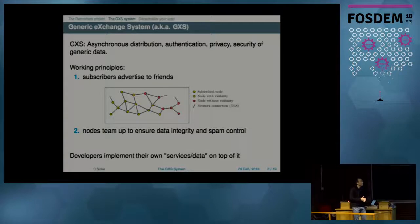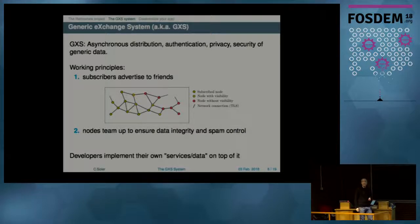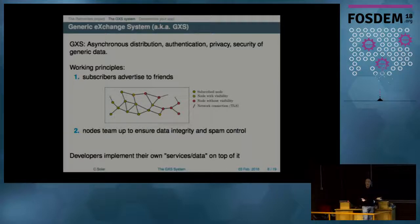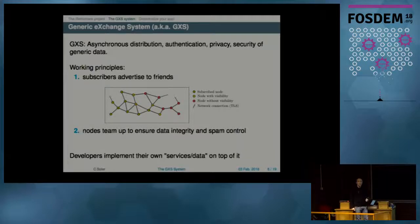GXS takes care of the distribution, authentication, privacy, and security of the data. It's based on two principles. First, subscribers advertise to friends — when you want to access some data, you subscribe to it, get the data from your friends, and then make your friends aware that this data exists so they can subscribe too. Second, all nodes in the network participate in data integrity, spam control, and flooding control. On top of this, the services are implemented.